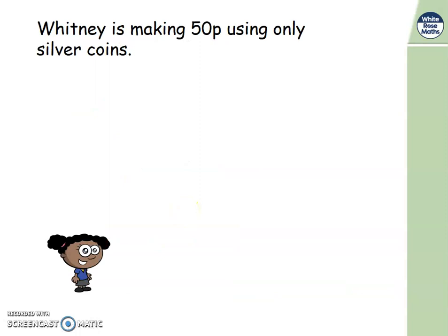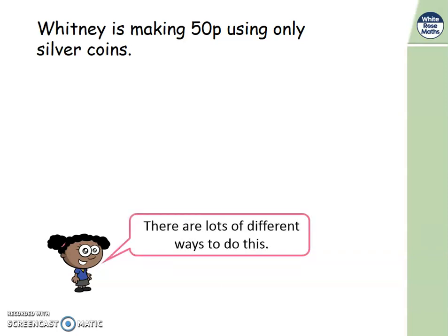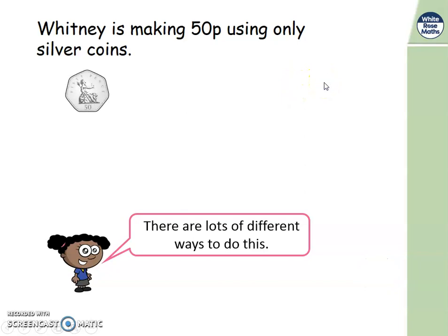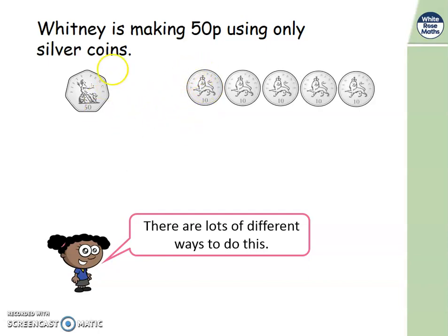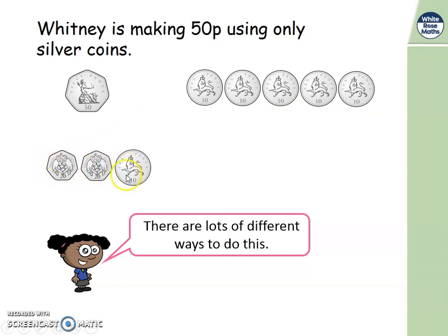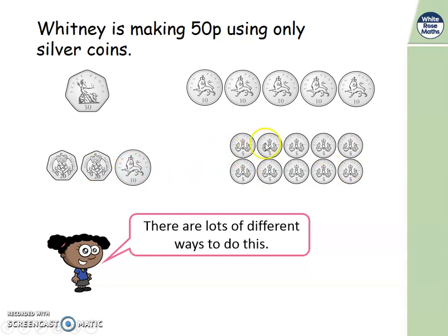Let's have a look at this problem for Whitney. Whitney is making 50 pence using only silver coins — she says there are lots of ways to do this. Pause the video and think which coins are silver. Well, 50 pence is silver, so she could make it that way. She could use 5 ten-pence coins. She could use 2 twenties — 20, 40 — and add 10 more, that makes 50. She could use lots of 5 pences: 5, 10, 15, 20, 25, 30, 35, 40, 45, 50 pence.